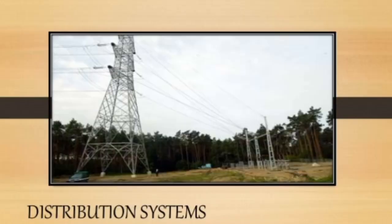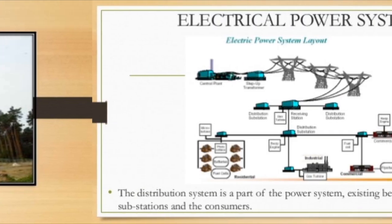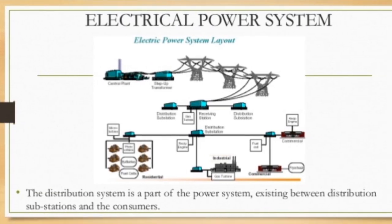In the last session we discussed about what is a distribution system and the different definitions used in different distribution systems. Now, electrical power distribution system is the part of our system which exists between the distribution substation and the consumers for local use — that is the electrical distribution system.